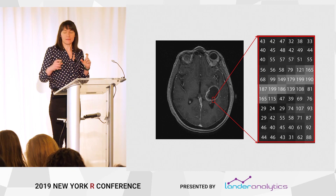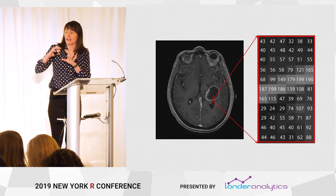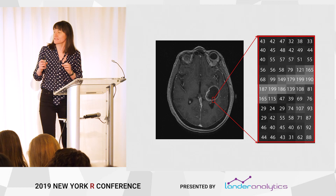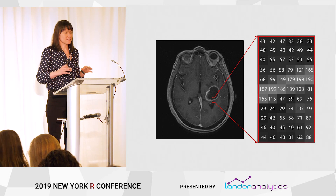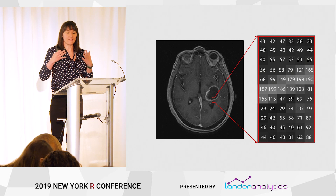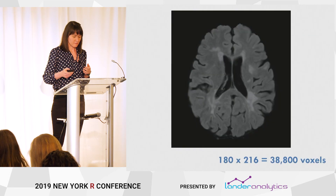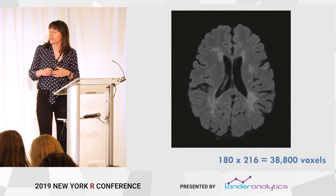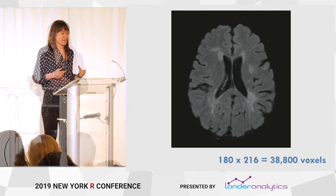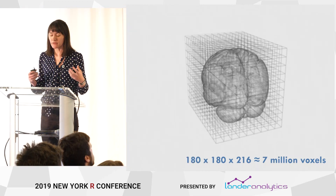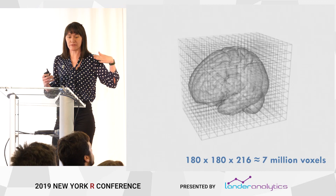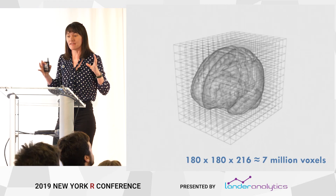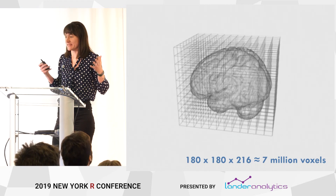I've blown up a little box on the image to show where the data is. Each one of the voxels or pixels in this image corresponds to a number. Areas that are darker have lower numbers; areas that are brighter have higher numbers. If I have one single axial slice, I have about 38,000 voxels. But you don't just get one slice — you get a picture of the entire brain made up of many different slices, giving me about 7 million voxels. So I'm starting to get what I consider big data.